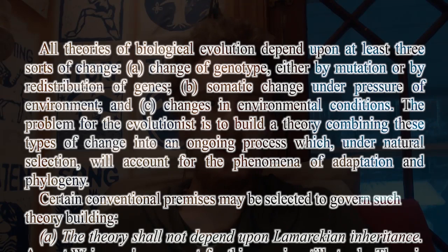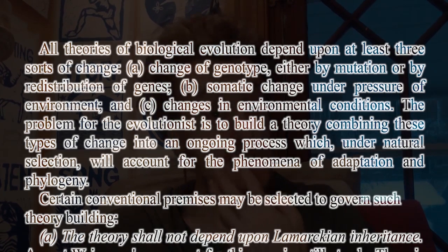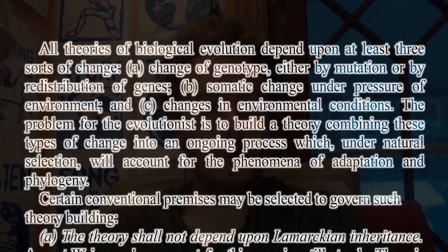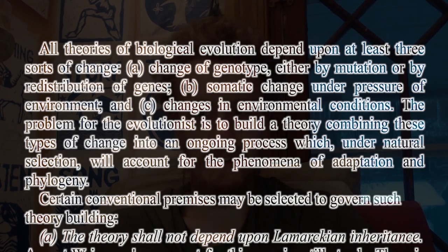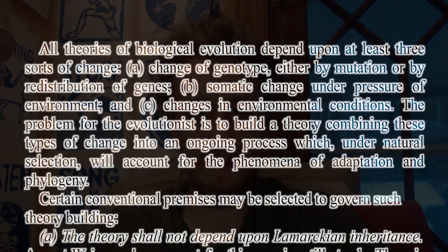All theories of biological evolution depend upon at least three sorts of change: A. Change of phenotype, either by mutation or by redistribution of genes. B. By somatic change under pressure from environment. And C. Changes in environmental conditions. Change in genotype, change in the body because of the body's own plasticity, and change because the environment changes.